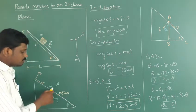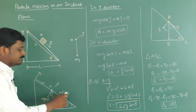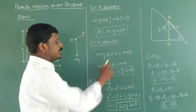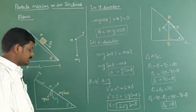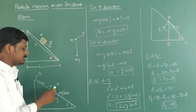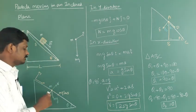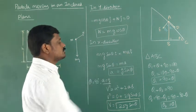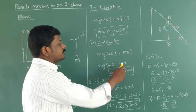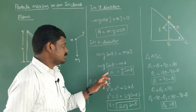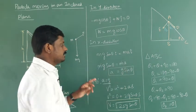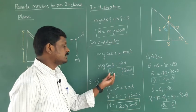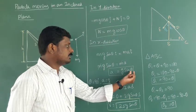For motion along the x direction, the force is mg sine theta in the i-cap direction. Using Newton's second law, mg sine theta equals ma. The mass m cancels on both sides, giving acceleration a equal to g sine theta. So the acceleration of the object depends on the angle of inclination.